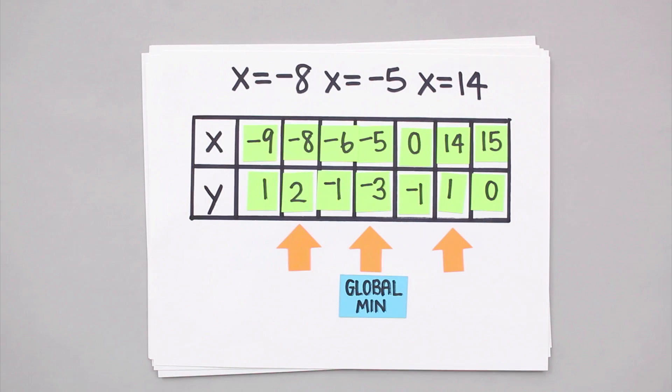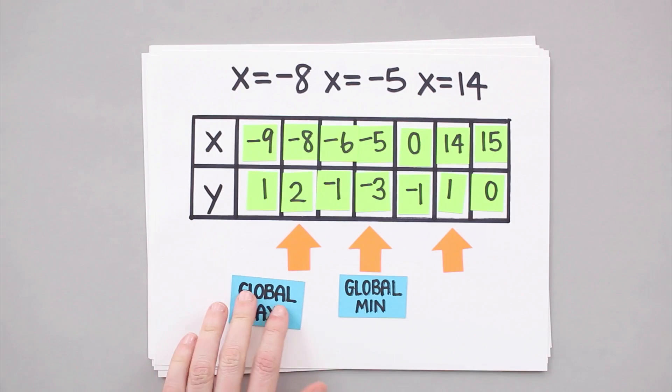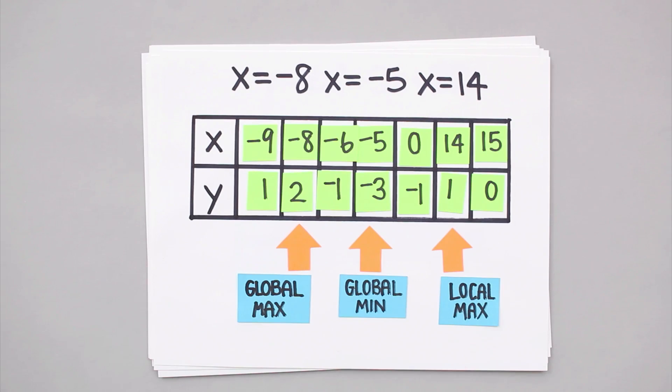If we compare the two maximum values, we have negative 8, positive 2, and then 14, positive 1. Since 2 is greater than 1, the global maximum on this interval has to be at negative 8, 2, which means that 14, 1 is just considered a local maximum.